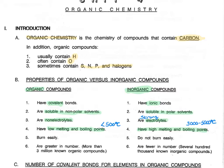It is well known that organic compounds burn very easily, whereas inorganic compounds do not burn readily at all. In fact, this is used as a test for organic compounds. When we have a fire, you can see that the leaves, the wood, the paper will all burn because they are organic compounds. On the other hand, things like the cement, the bricks, and the metal do not burn, and they are inorganic compounds.